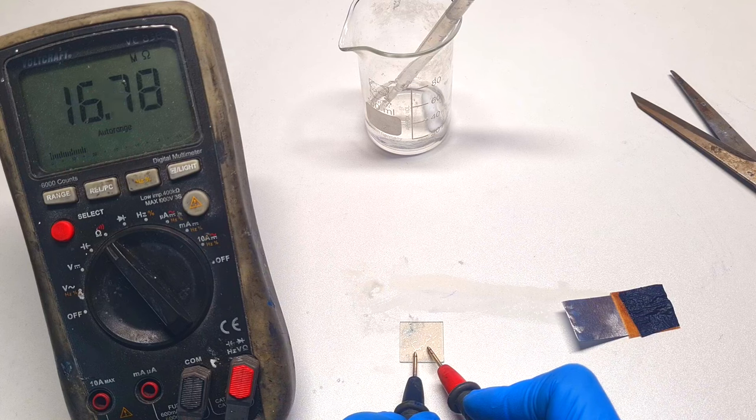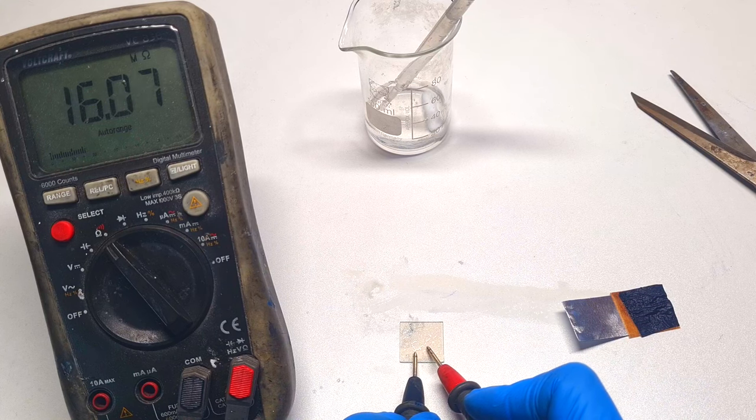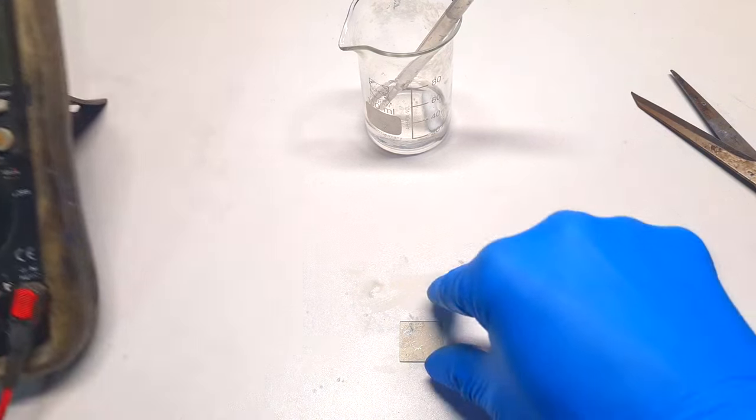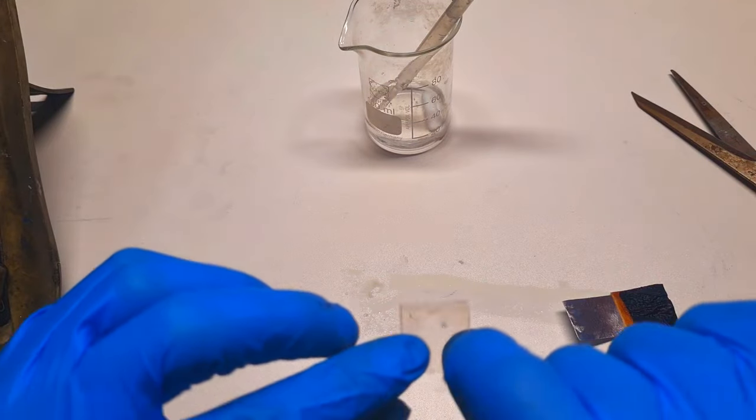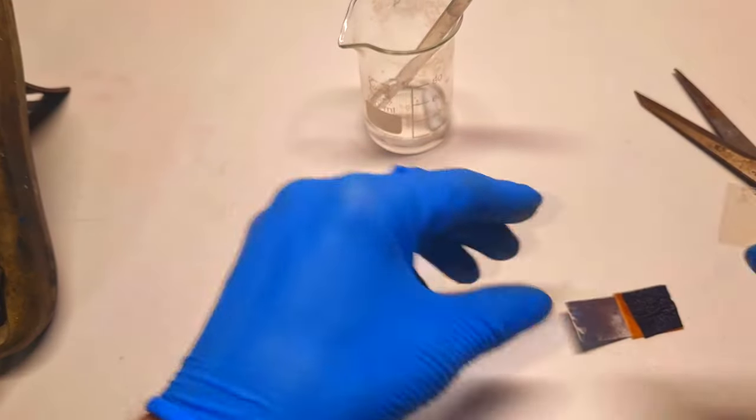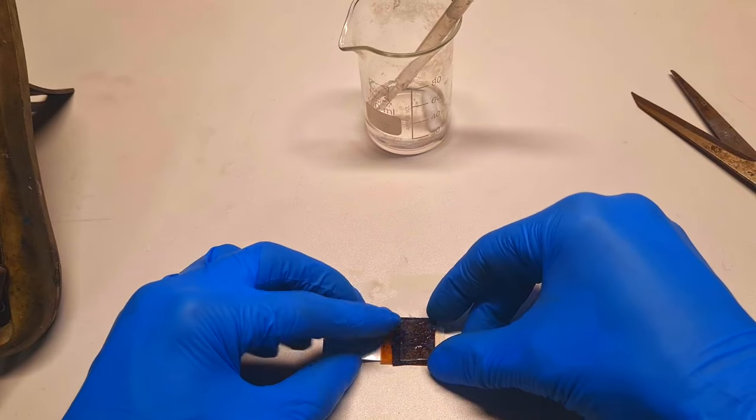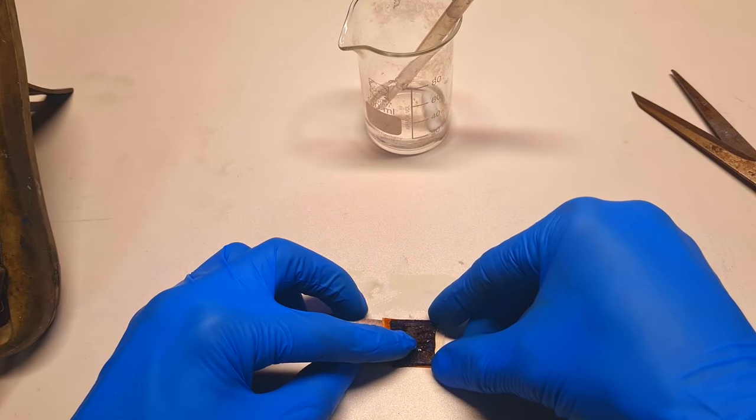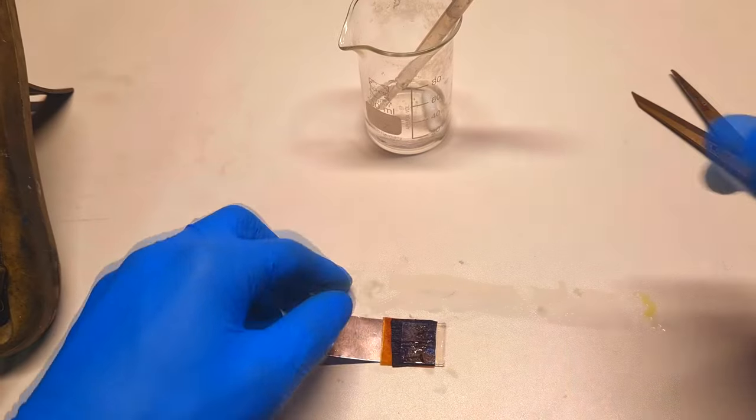And now here I get some mega ohms range. So this side is the conductive side. And now this indium tin oxide glass I will put on top of this Prussian blue.